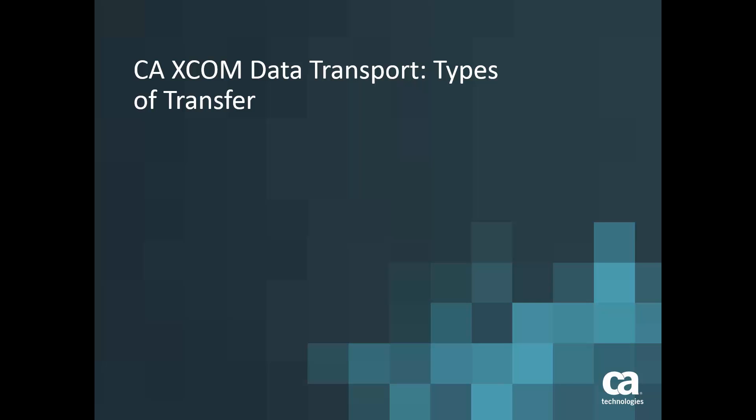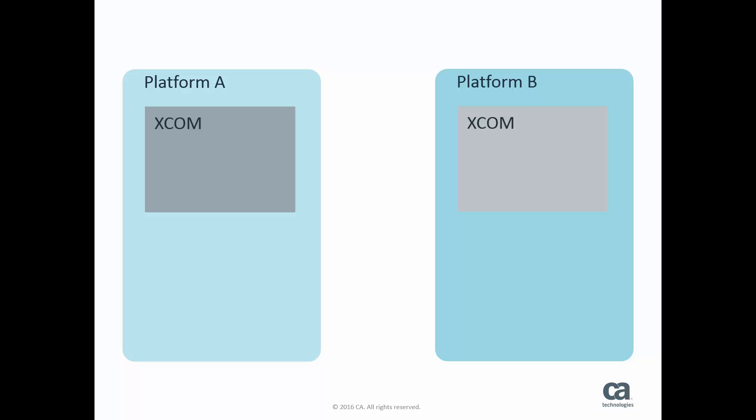XCOM is a product able to run on various platforms whose purpose is to transfer data between these platforms. Let's look at the typical constellation. We have two machines running the same or different operating systems. That can be any of the operating systems XCOM supports, for example ZOS, Windows, Unix, Linux, or AS400.